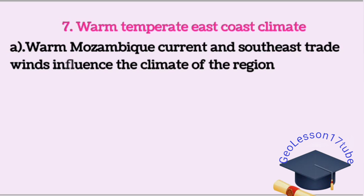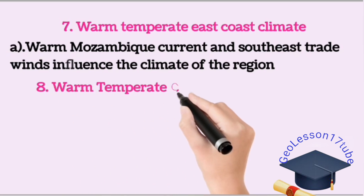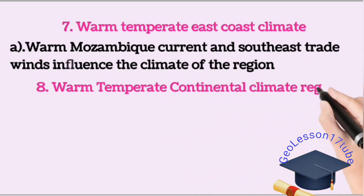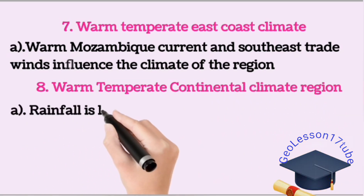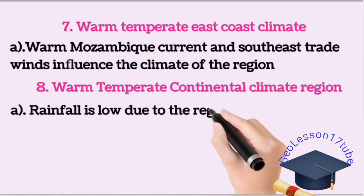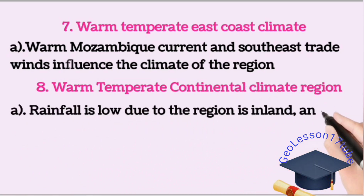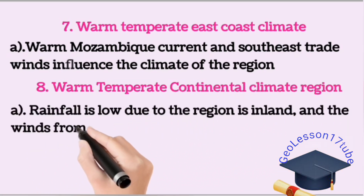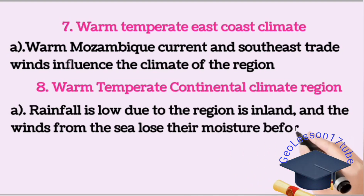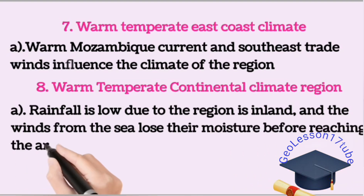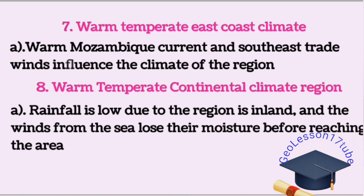In the warm temperate continental climate region, rainfall is low because the region is inland and winds from the sea lose their moisture before reaching this area.